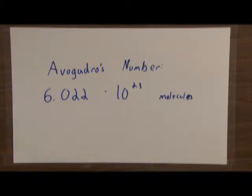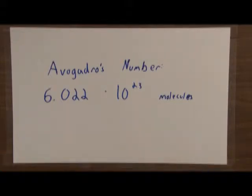We use this because doing atom-by-atom is very difficult. Instead, we use Avogadro's number as the value of one mole. Because it's molecules, one molecule of a more complex compound can be broken into multiple molecules — or by extension, multiple moles — of a more simple compound or element.